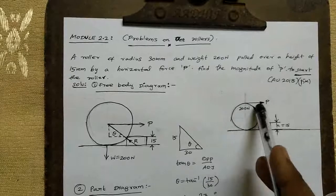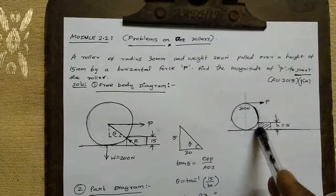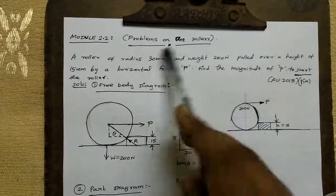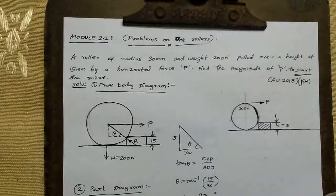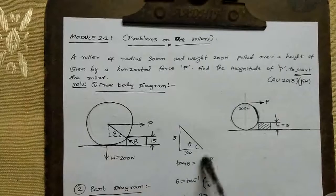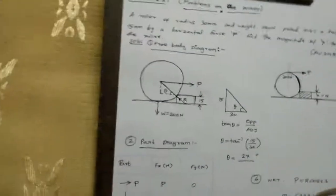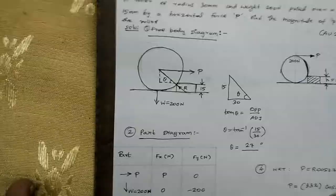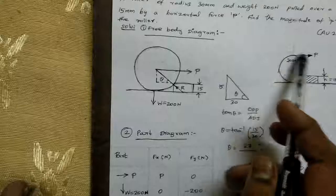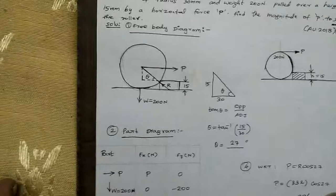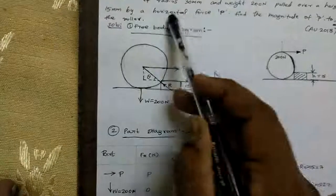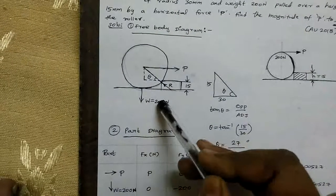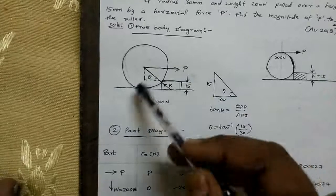The roller weight is 200 newton, force is capital P, and all dimensions give a height of 15 mm. Regarding the free body diagram, capital P acts horizontally — look at the bottom where the roller contacts the step corner.